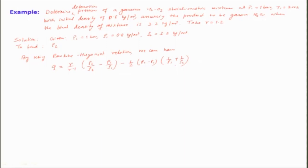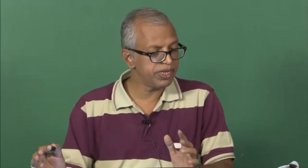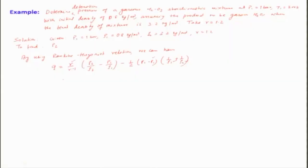Looking at what is given: P₁ is given, ρ₁ and ρ₂ are given, and gamma is 1.2. We do not know P₂ and we do not know Q. Q is basically how much heat is being released. However, it is a stoichiometric mixture, meaning 2H₂ + O₂ → 2H₂O. So I need to find Q.